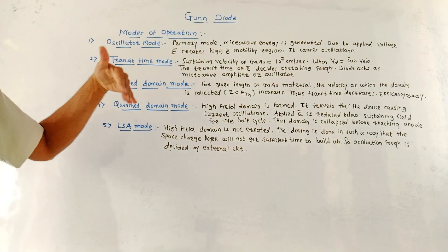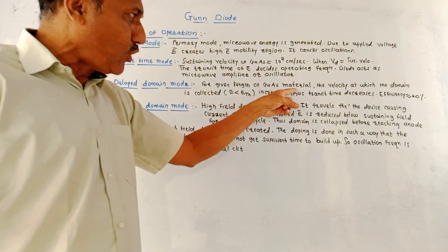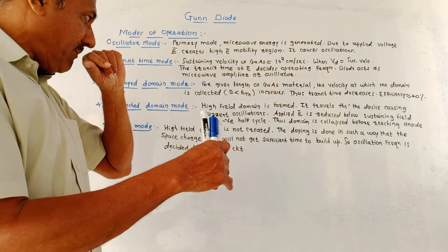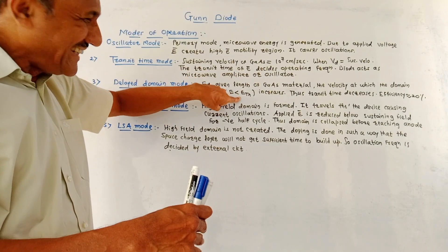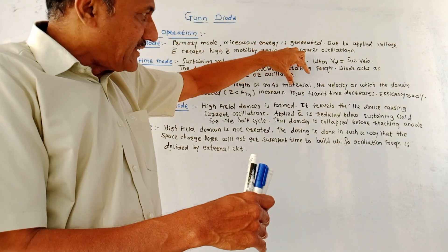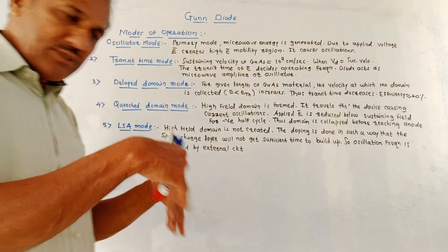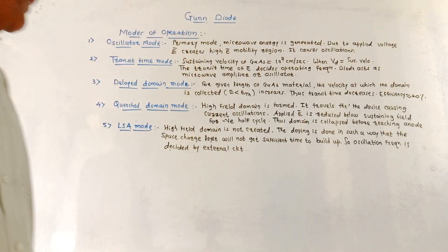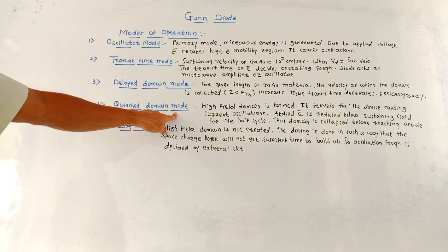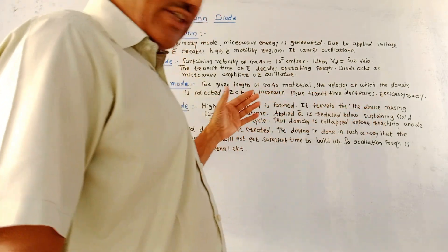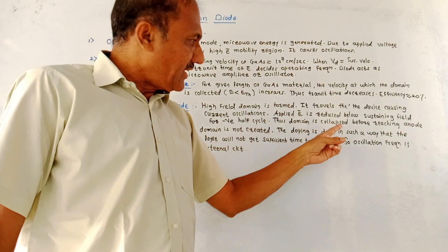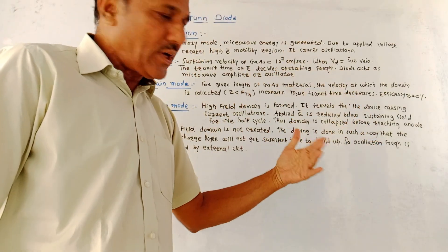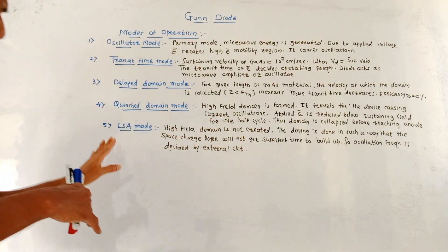Third is the delayed domain mode. For a given length of gallium arsenide material, the velocity at which the domain is collected increases when the applied electric field is less than the threshold value. Thus the transit time decreases due to increased velocity. Efficiency in this mode is typically around 20%. Fourth is the quenched domain mode. A high-field domain is formed and travels through the device causing current oscillations. The applied electric field is reduced below the sustaining value during the negative half-cycle, so the domain collapses before reaching the anode, and the process repeats on the positive half-cycle.